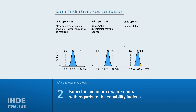Furthermore, you should be able to use a capability index number to assess the extent to which a process or machine is suitable for producing low-defect products.